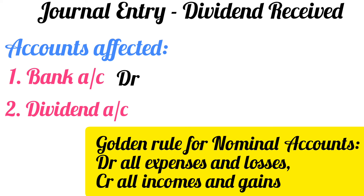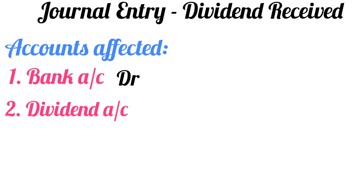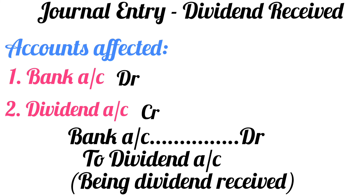Dividend account is a nominal account. The golden rule for nominal account says: debit all expenses and losses, credit all incomes and gains. Dividend is your income, so as per the golden rule, dividend account will be credited. The journal entry becomes: bank account debit to dividend account, and the narration will be — being dividend received.